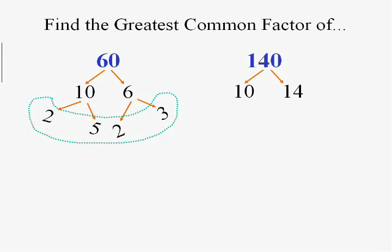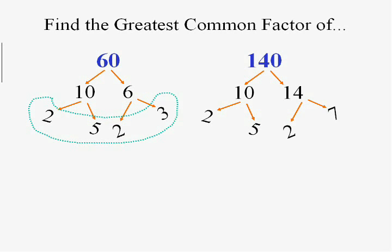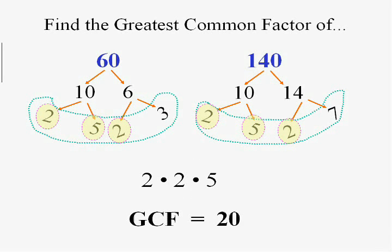140, let's see, we'll do 10 times 14 and then keep going. 10 is 2 times 5 and 14 is 2 times 7. Now survey the two groups and see what they have in common. They both have two 2s and a 5. So they both have 2 times 2 times 5 as factors and that multiplies to 20. And if you think about it, 20 is the largest number that goes into 60 and 140. And that's the greatest common factor.